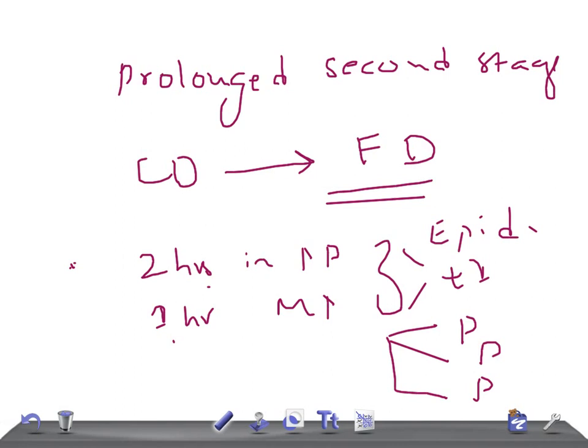Any abnormalities in the pelvis like CPD or bone tumors can lead to prolonged second stage, or any abnormalities in power like inadequate uterine contraction or dysfunctional labor.